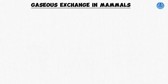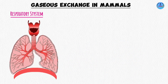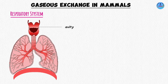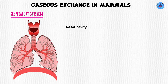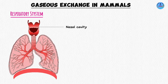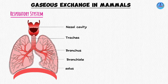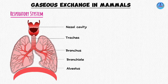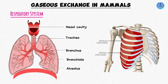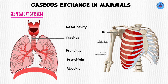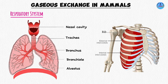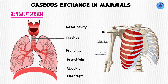Let us start with the first one. The breathing system in mammals consists of the following structures: we have the nose and the nasal cavity, the trachea, the bronchi, the bronchioles, and the air sacs, which are found in the lungs. We also have the chest cavity that consists of the ribs and intercostal muscles, and lastly, and most importantly, the diaphragm.